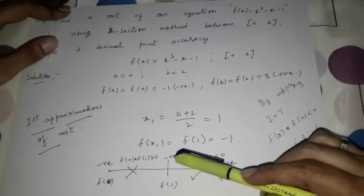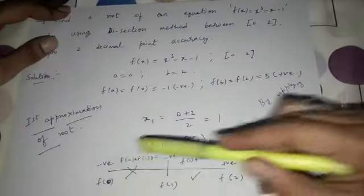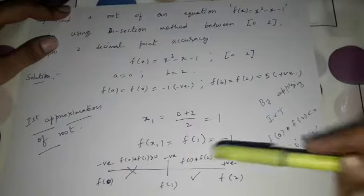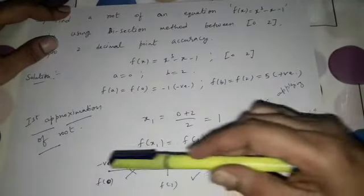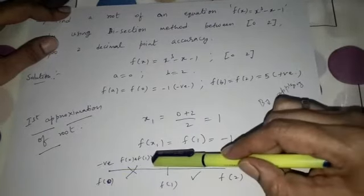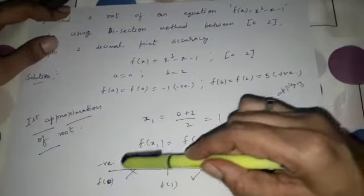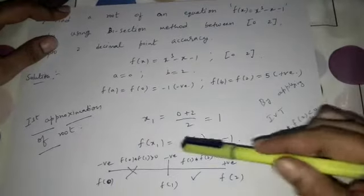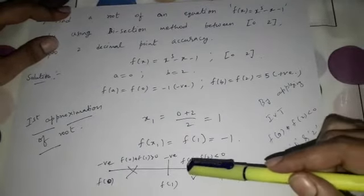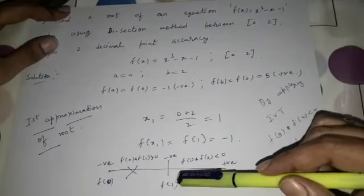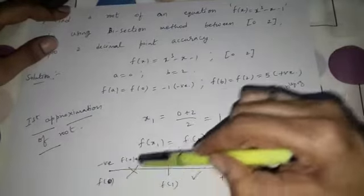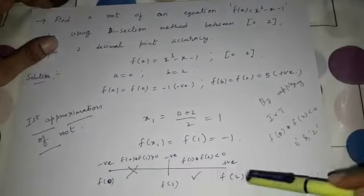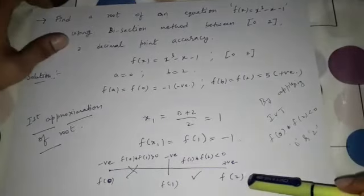So f(1) is negative, and f(0) is also negative, while f(2) is positive. Applying the intermediate value theorem: f(0) × f(1) = negative × negative = positive, so root does not exist between 0 and 1. Whereas f(1) × f(2) = negative × positive = negative, so root exists between 1 and 2. My new interval is now 1 and 2.